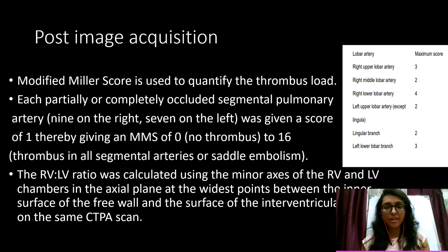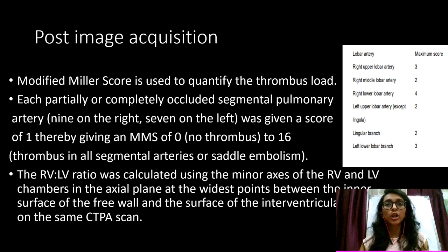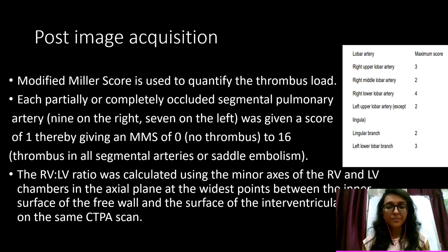After image acquisition, the modified Miller score was used to assess thrombus load. Scores of 0 or 1 were assigned per vessel: 0 for no thrombus, and 1 for either a partially or completely occluding thrombus. The score was calculated based on occlusion of segmental arteries — maximum score is 16 (9 on the right, 7 on the left), and minimum is 0. The RV/LV ratio was then calculated using the minor axis of each ventricle in the axial plane, measuring from the interventricular septum to the inner ventricular wall at the widest points.